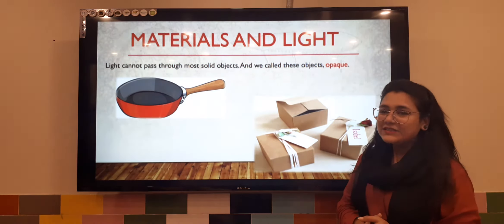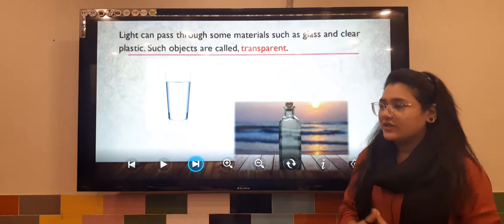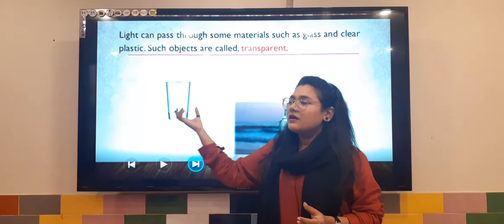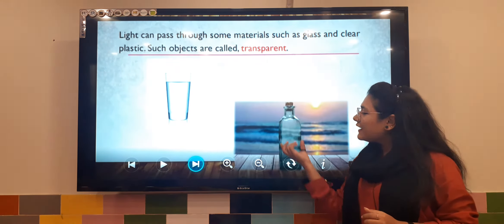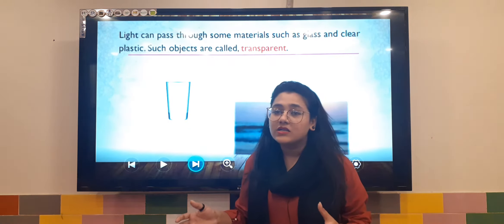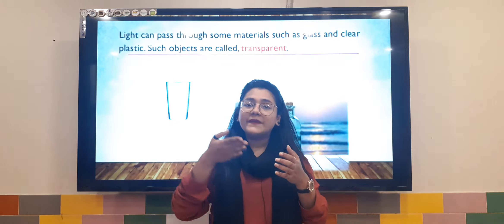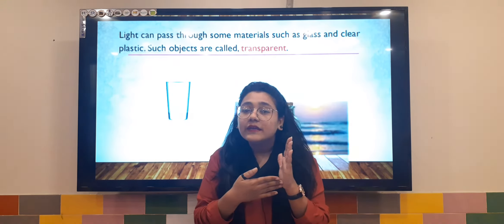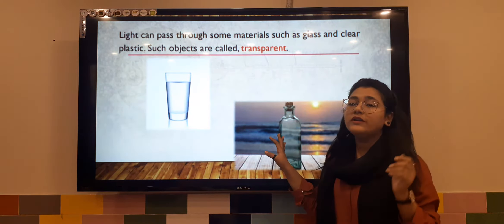The next one is transparent objects. You can see here we have a glass and a glass bottle — these are what transparent objects look like. These objects are called transparent because light passes completely through them.